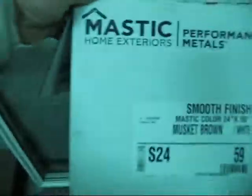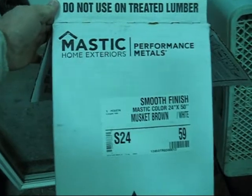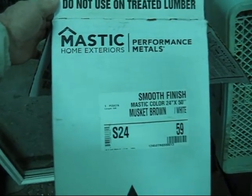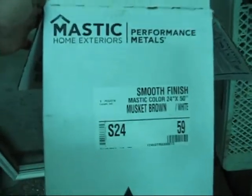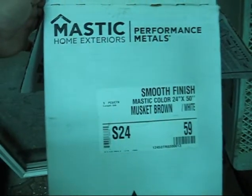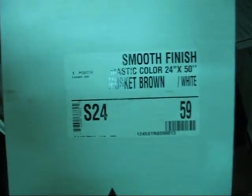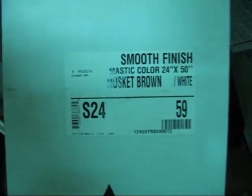And I bought that aluminum, it's called Trim Coil. You can buy that at anywhere that sells siding, soffit and fascia materials for construction for new homes. So this is Mastix Performance Metals. Yep, 24 inches by 50 feet long. So I just lined the bottom of it with that, drilled my holes through.